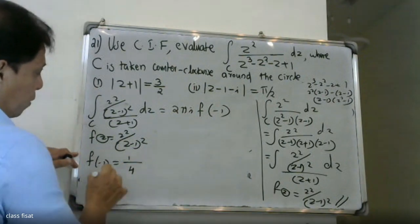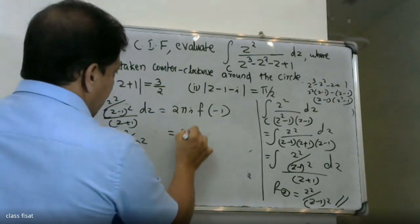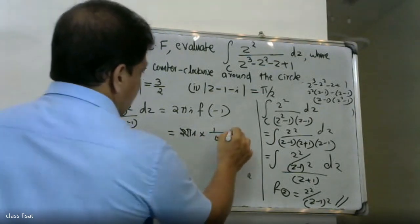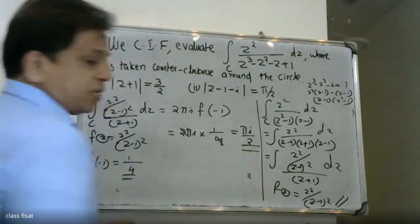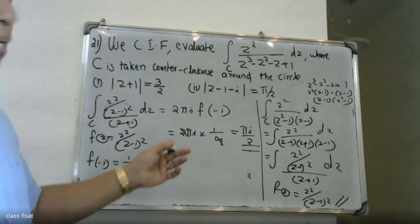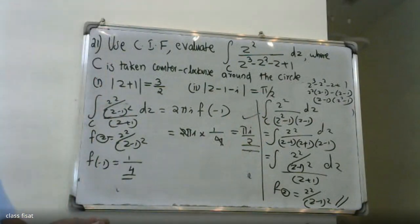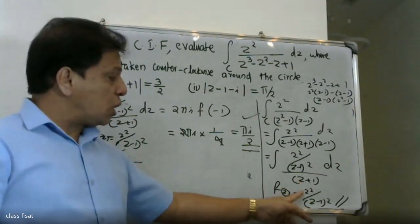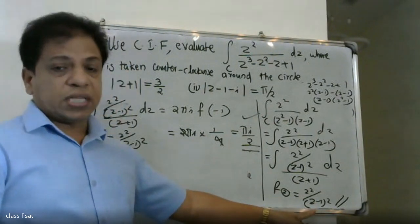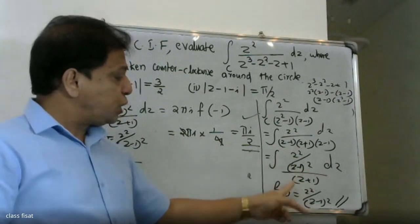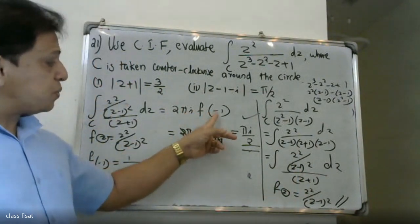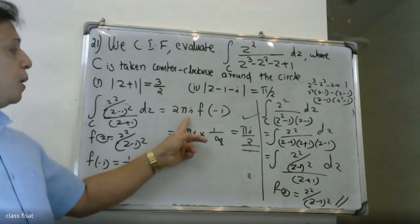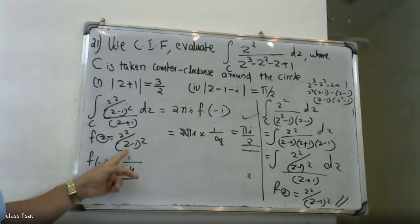Evaluating: f(minus 1) equals (minus 1) squared divided by (minus 1 minus 1) squared, which gives 1 divided by 4. Therefore the result is 2 pi i times 1/4, which simplifies. We also note that z plus 1 lies inside the region, so we apply the formula with a equal to minus 1, giving the answer as 2 pi i times f(minus 1).